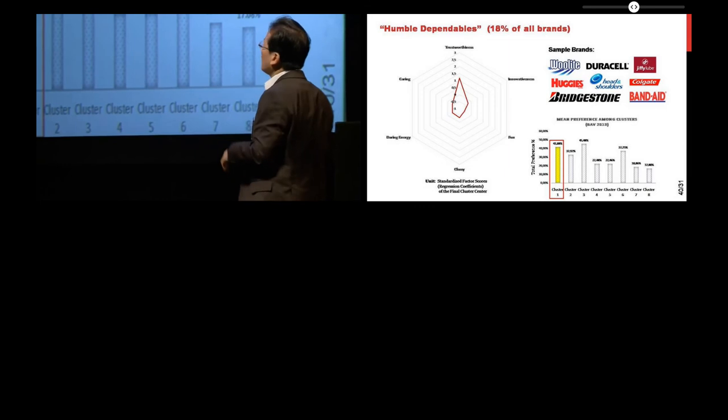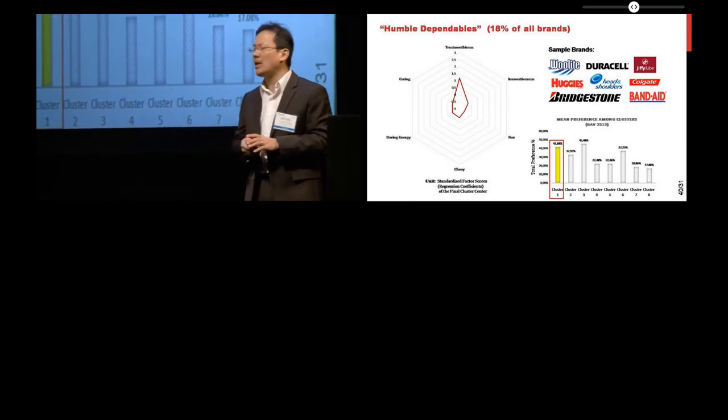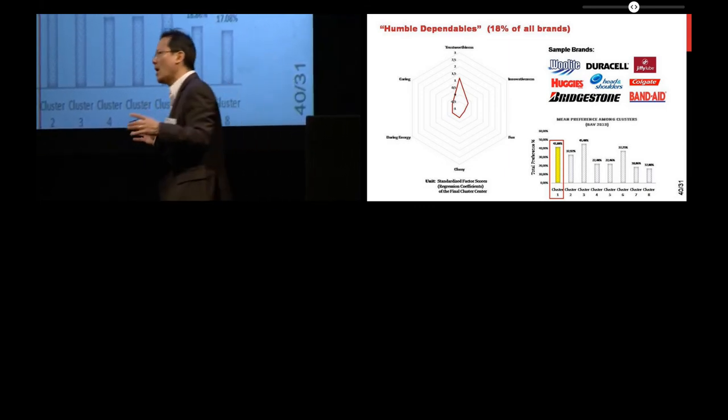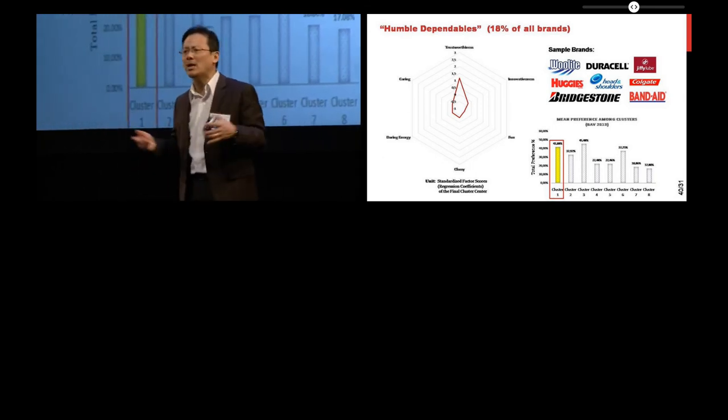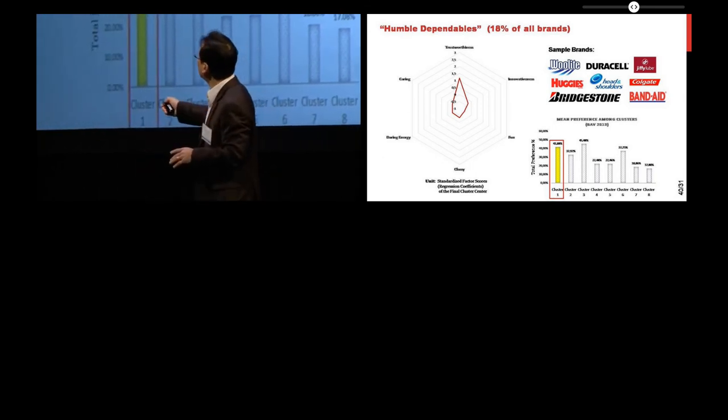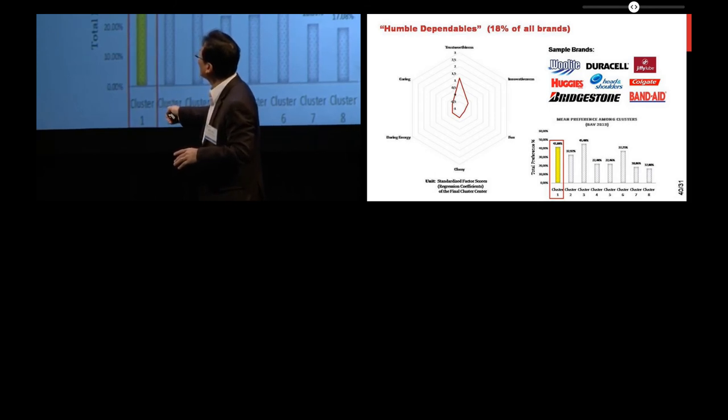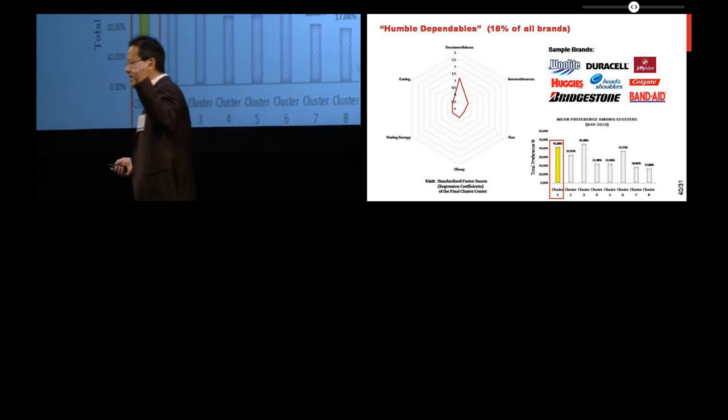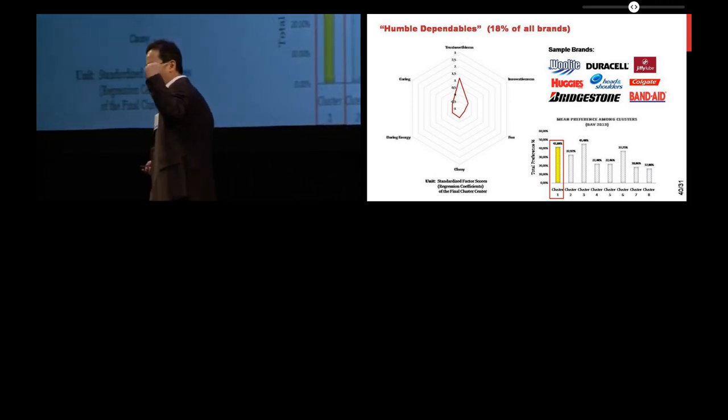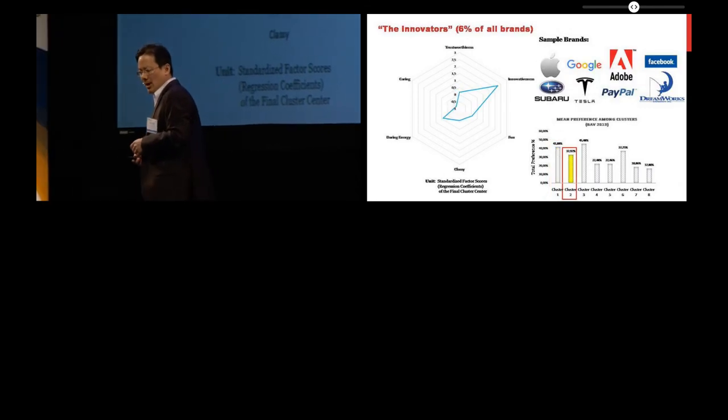So one cluster we identified as the humble dependables. They are like the brands that are not very expensive, but they're very trustworthy, very dependable, doing very well here. So you see this spike on trustworthiness, there's nothing out of the ordinary on the other dimensions. Those brands here generate very high degrees of preference. And you see some examples: Duracell will be one, Huggies, Band-Aid will be a classic one.